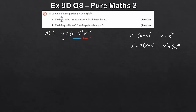Now we've got u, u prime, v, and v prime, so we can apply the product rule. The product rule states: to find dy by dx, take u times the derivative of v, then add v times the derivative of u.